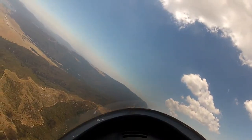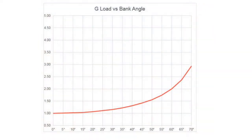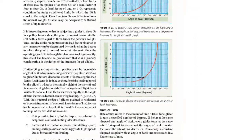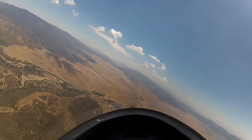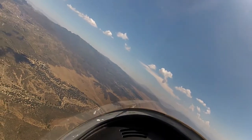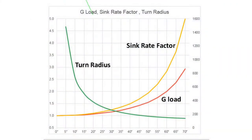Let's start with a plot of G-load against bank angle — you've seen this before, it's in all the learn-to-fly books. Now let's look at what other parameters are affected. As we increase the G-load, the glider is going to sink faster — it's heavier. In this chart, we can see that the increase in sink rate goes up faster than the G-load. At 45 degrees, the G-load has gone up about 40%, but the sink rate has increased 68%.